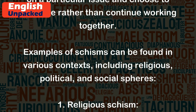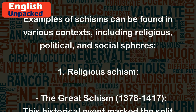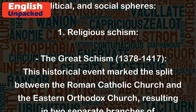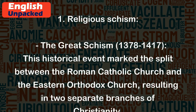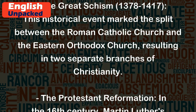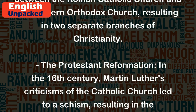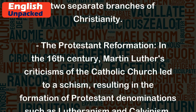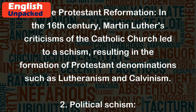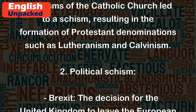Examples of schisms can be found in various contexts, including religious, political, and social spheres. 1. Religious Schism: The Great Schism (1378–1417) marked the split between the Roman Catholic Church and the Eastern Orthodox Church, resulting in two separate branches of Christianity. The Protestant Reformation in the 16th century saw Martin Luther's criticisms of the Catholic Church lead to a schism, resulting in the formation of Protestant denominations such as Lutheranism and Calvinism.